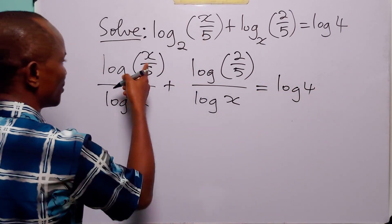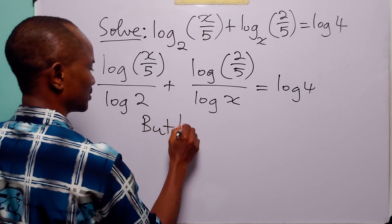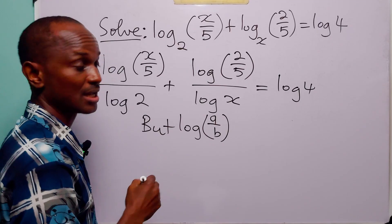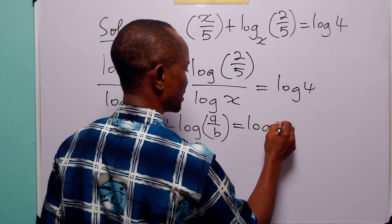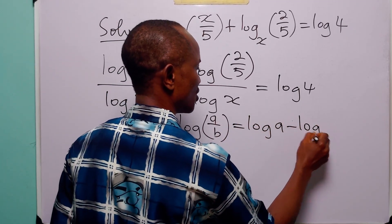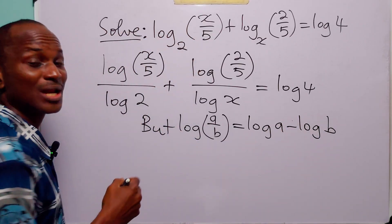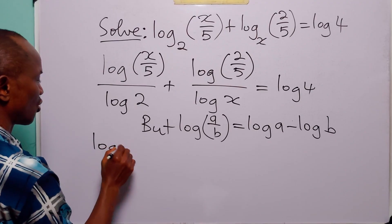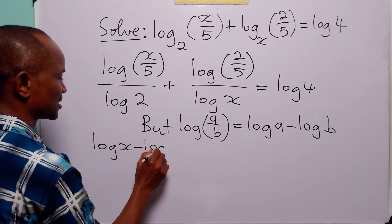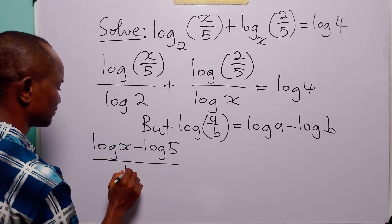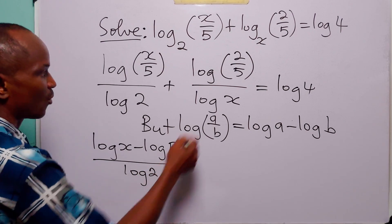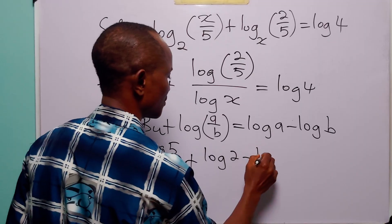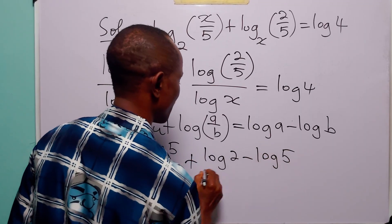Remember that log(a/b) equals log a minus log b. So the numerator of the first fraction can be written as log x minus log 5, and the numerator of the second fraction can be written as log 2 minus log 5.